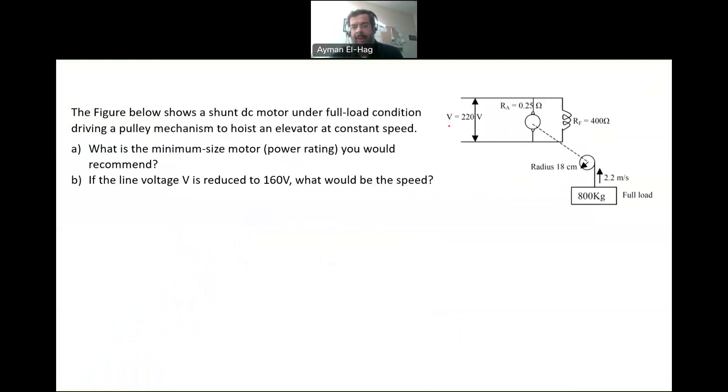We have our input voltage, we have here Re, and we have Rf. So Re is 0.25 ohms, and Rf is 400 ohms. Here we have a shunt DC motor under full load conditions. The load is 800 kilograms that is lifting up at a speed equal to 2.2 meters per second at a constant speed. And the radius between the load center and your motor is around 18 centimeters.